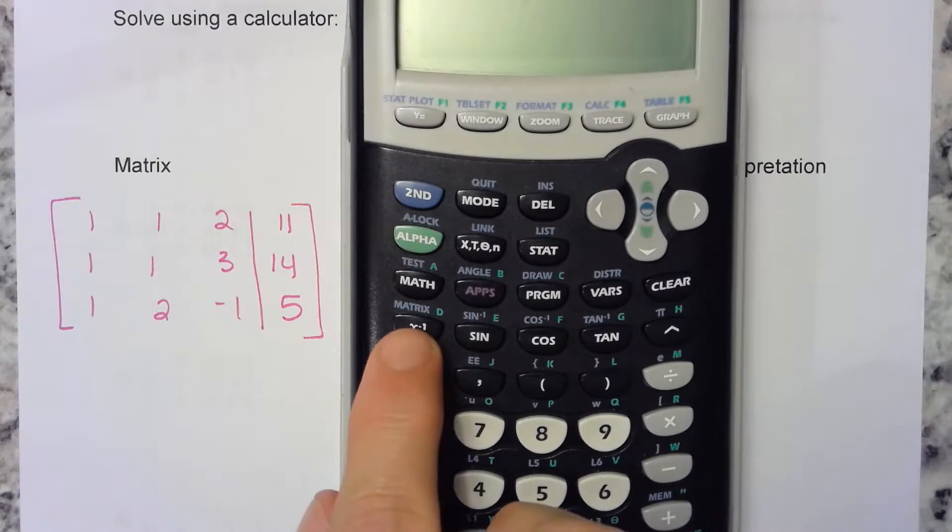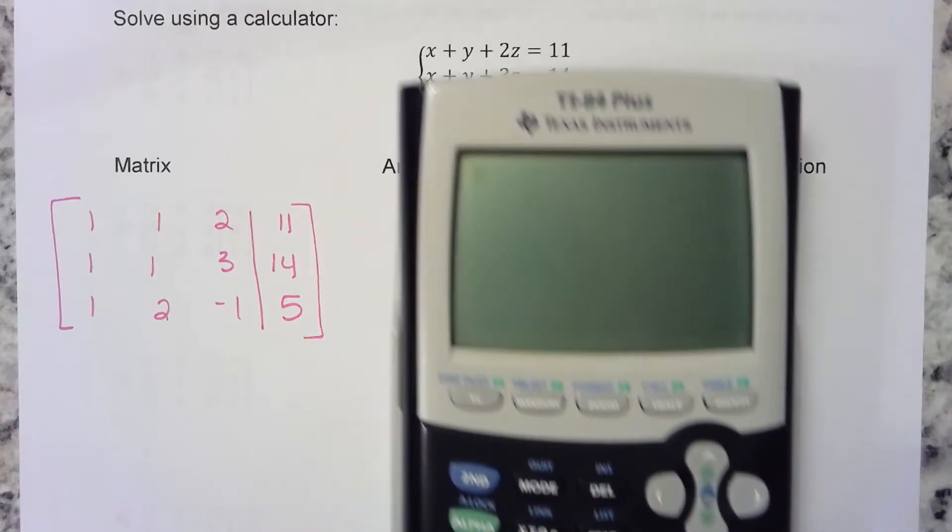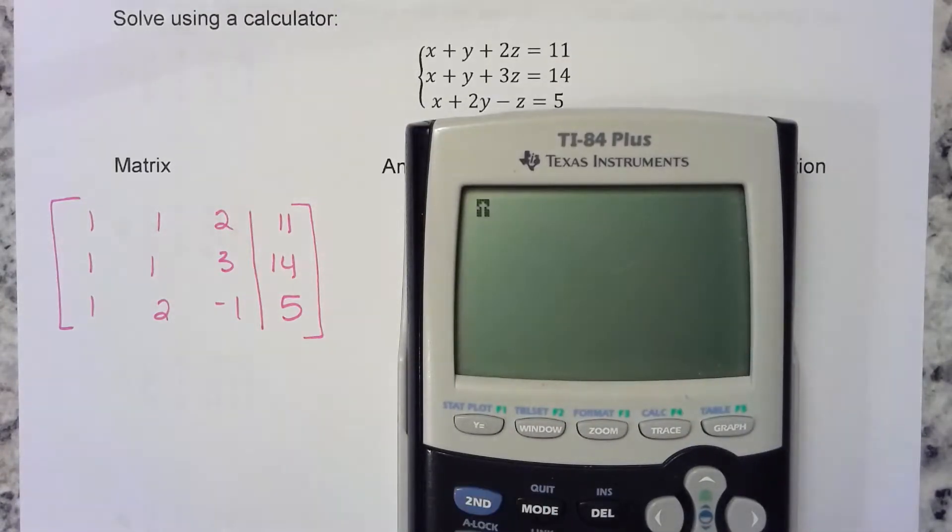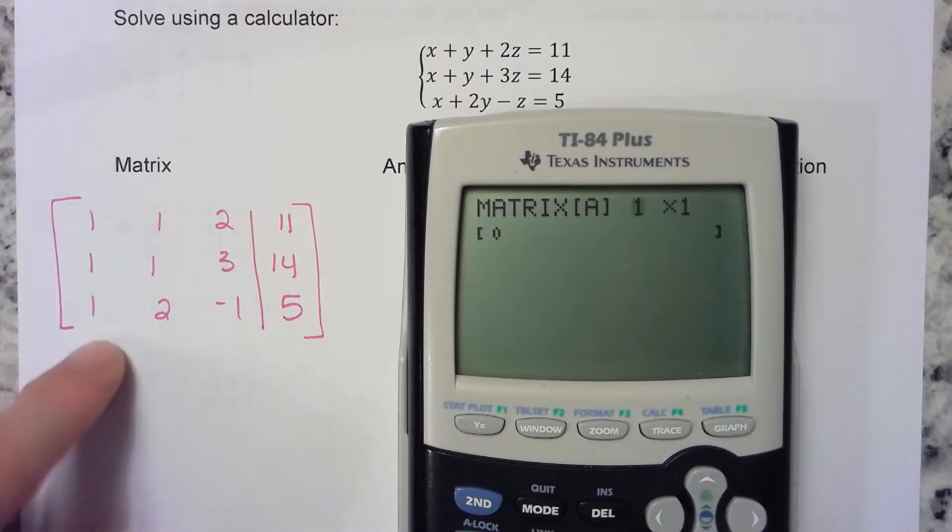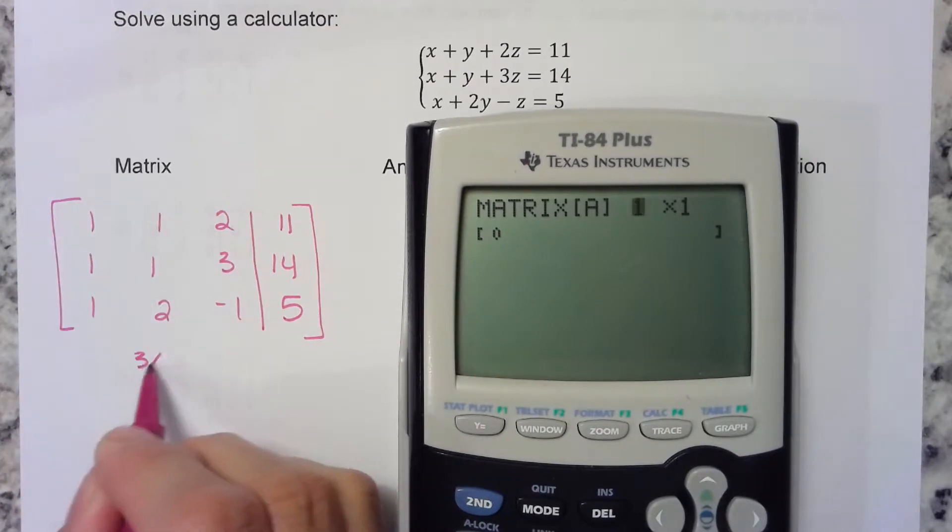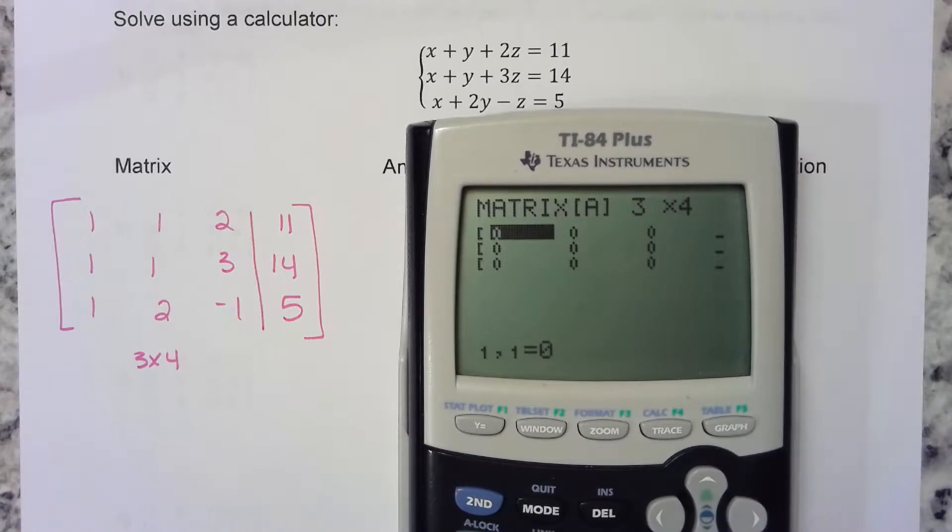On your calculator, you have matrix right above the inverse button. Go to second matrix, and we're going to edit a matrix. I'm just going to use matrix A. This matrix is a 3 by 4, so you have to enter 3 by 4. Push 3 enter, 4 enter.